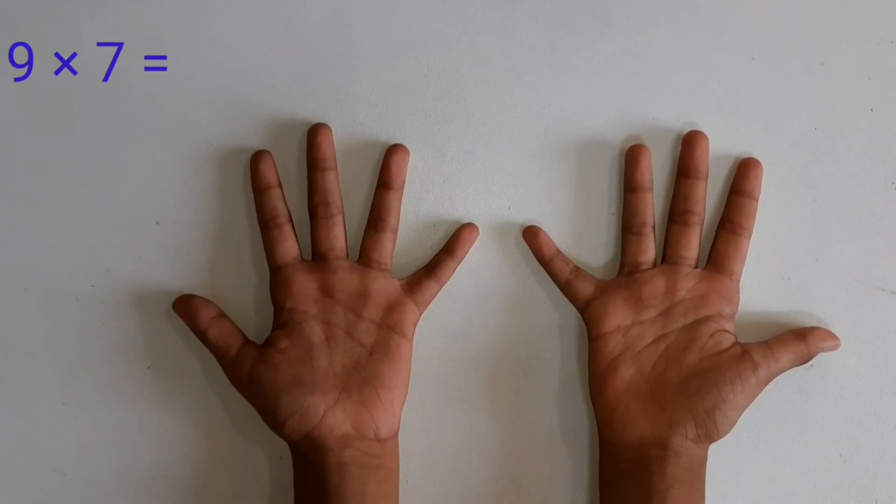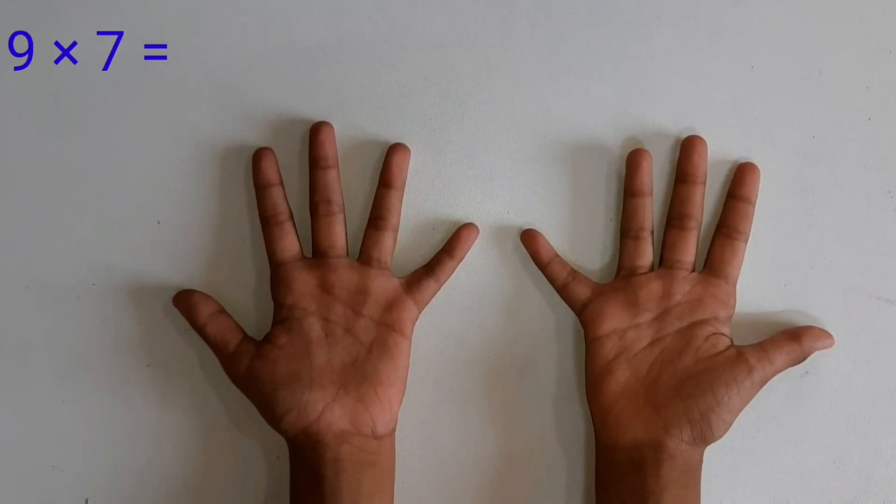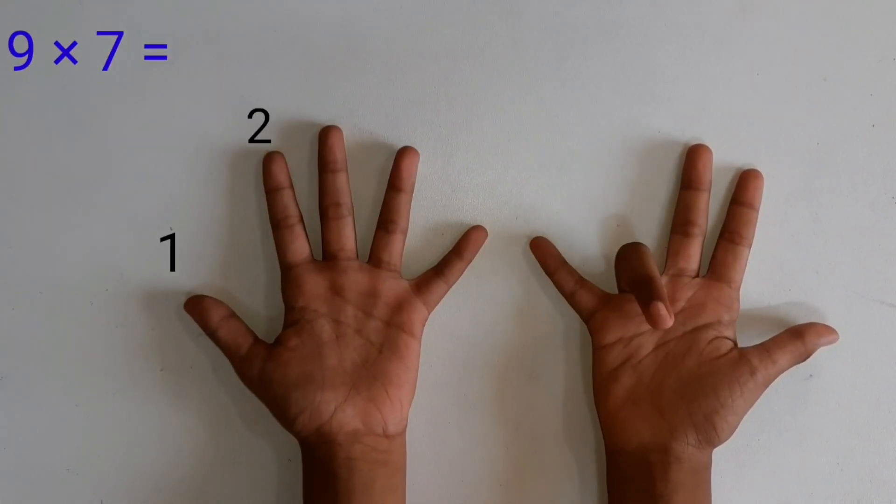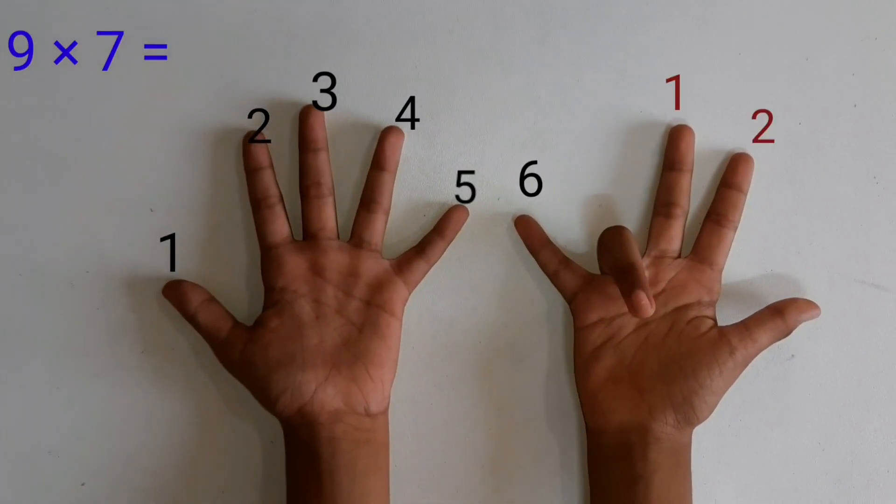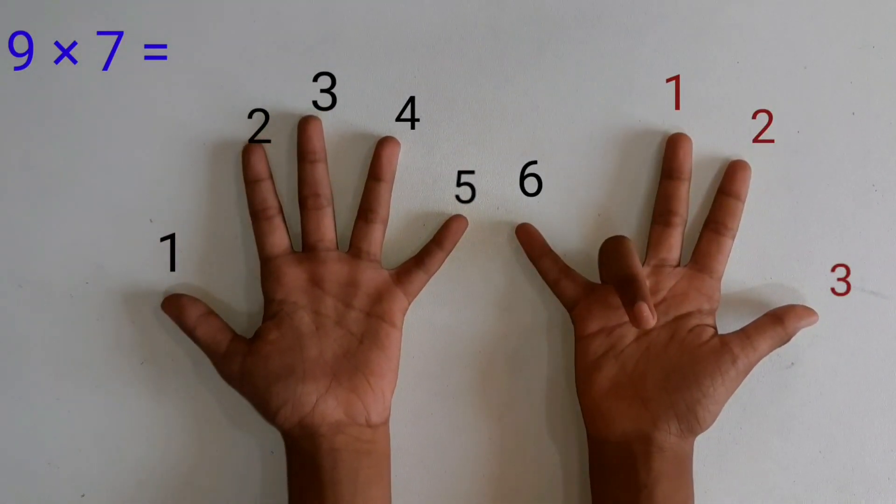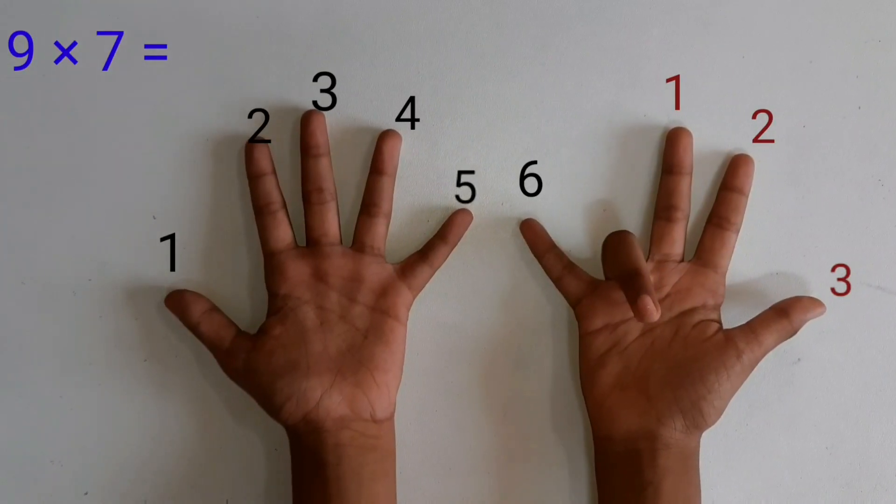Let's solve 9×7. Close the seventh finger. Here, 6 fingers up before the closed finger, 3 fingers up after the closed finger. So, the answer is 63.